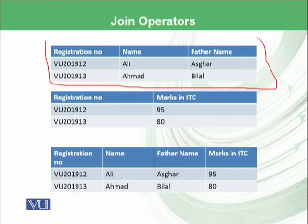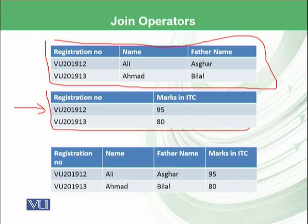This is a second file stored at an examination department. When we want to join these two relations, we want to produce one relation. You can see that in this joining, we have registration number common in both of the relations.